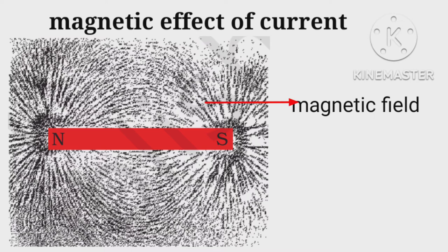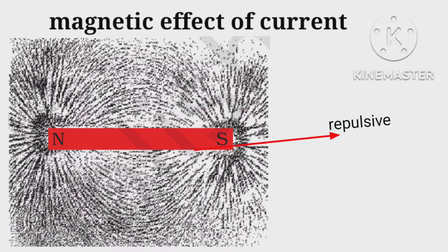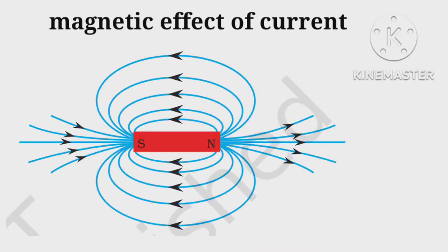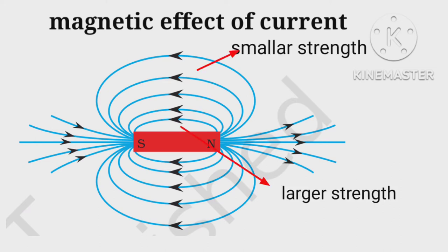This magnetic field has both attractive and repulsive nature. Circular loops near the magnetic axis are very close to each other, and the gap between the lines increases as we move away from the magnetic axis. Larger is the gap, smaller is the magnetic strength and vice versa.